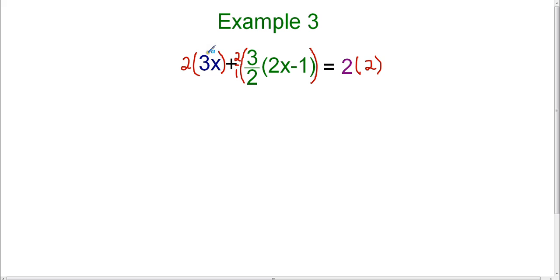So 2 times 3x is 6x. Now remember, when I'm working with the parentheses here, I only multiply the 2 times the 3 halves. I'll distribute once I get rid of the fraction. So since I have a 2 in the numerator and a 2 in the denominator, they simplify to 1, and I'm left with 1 times 3, which is just 3.